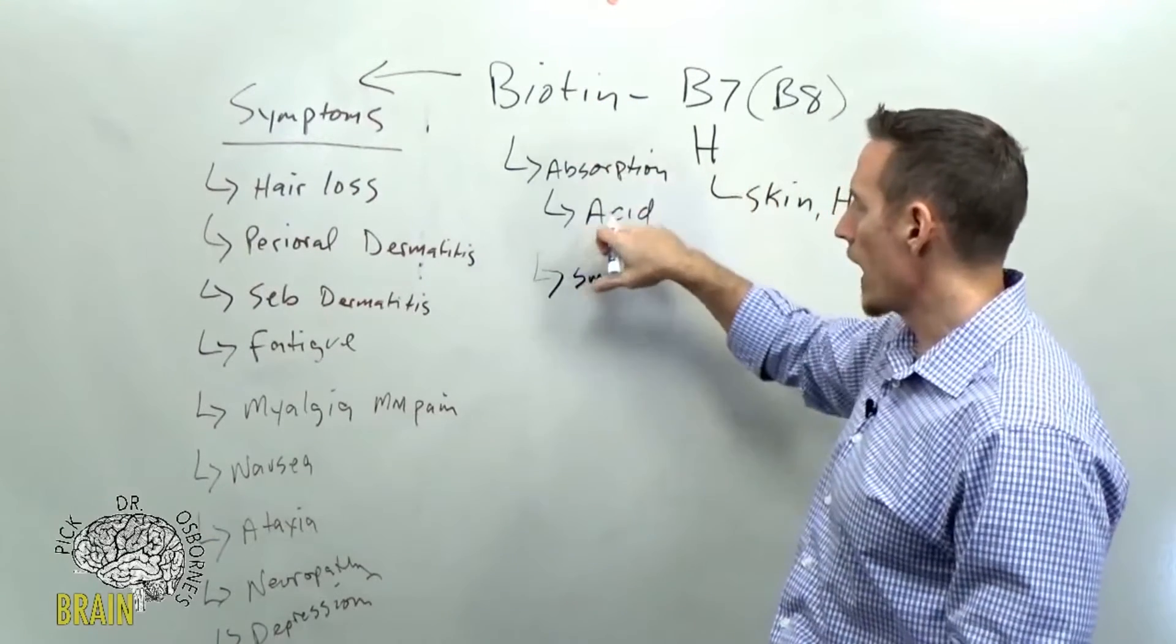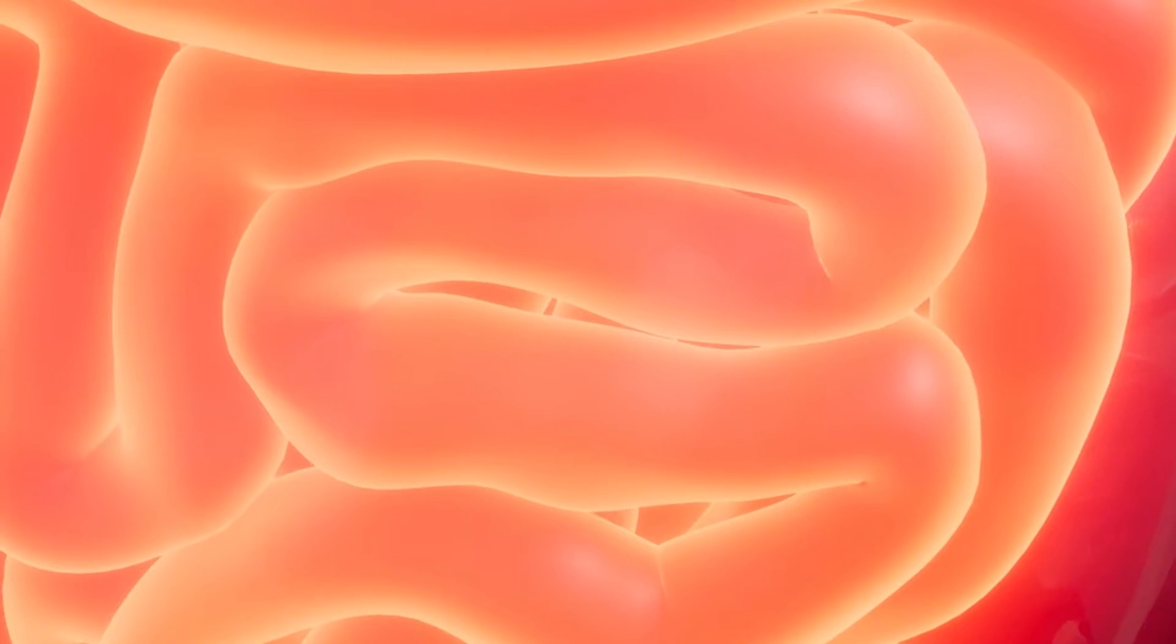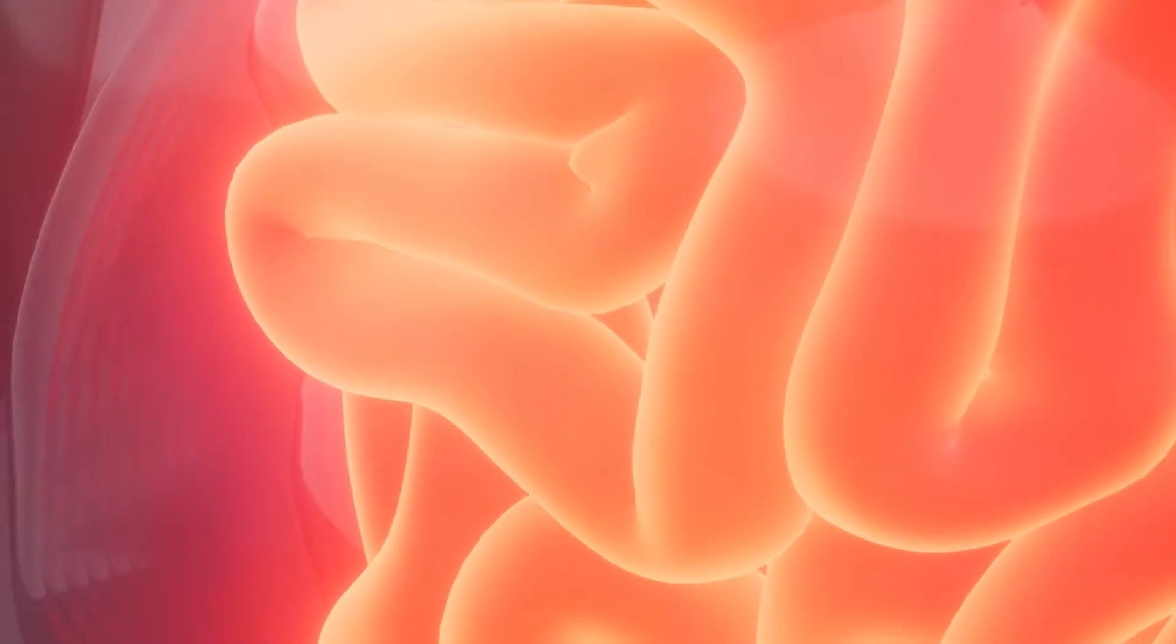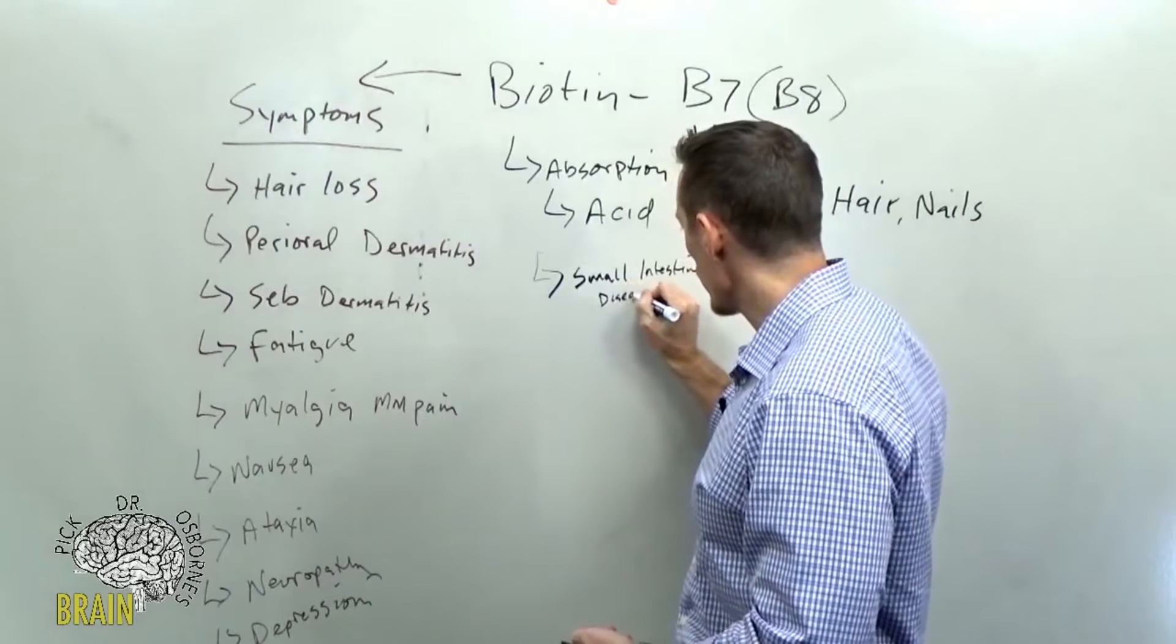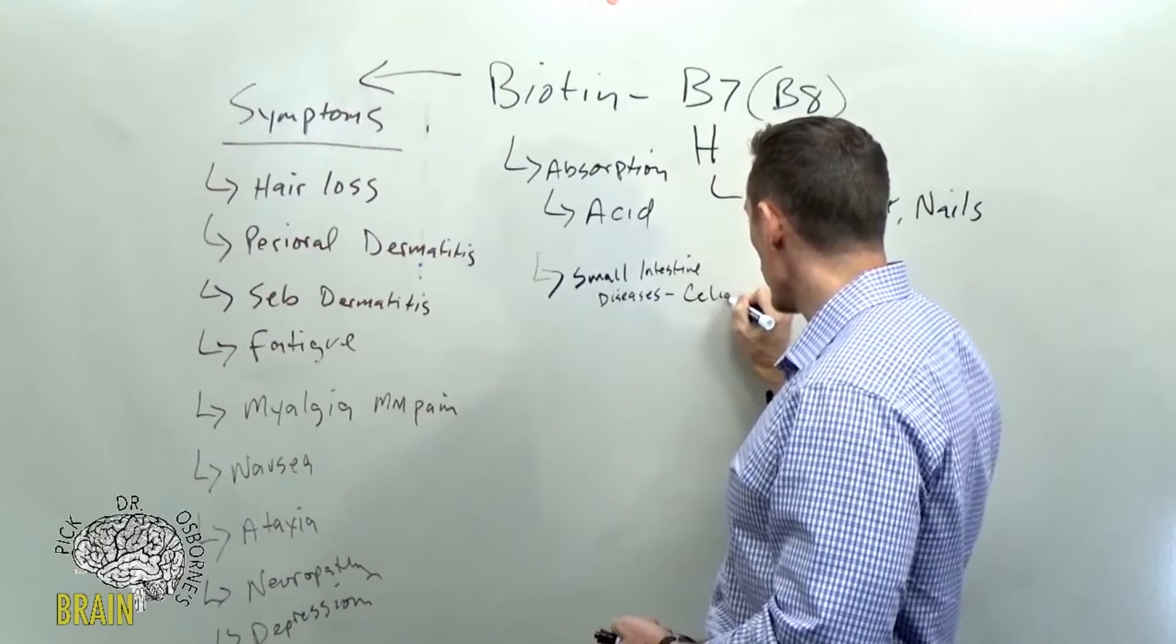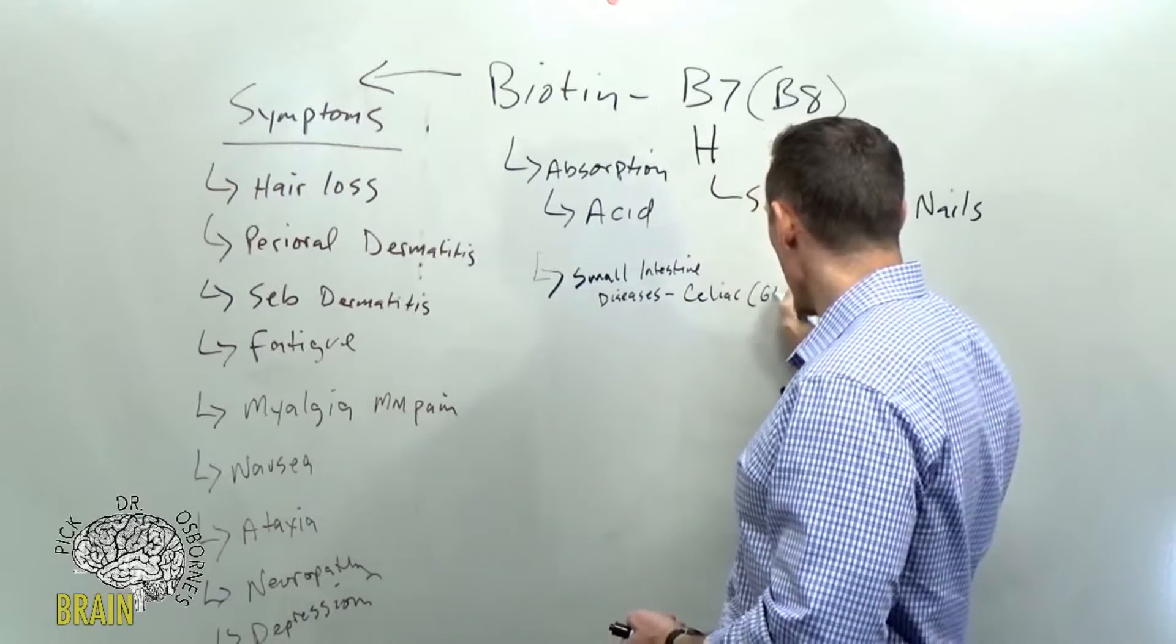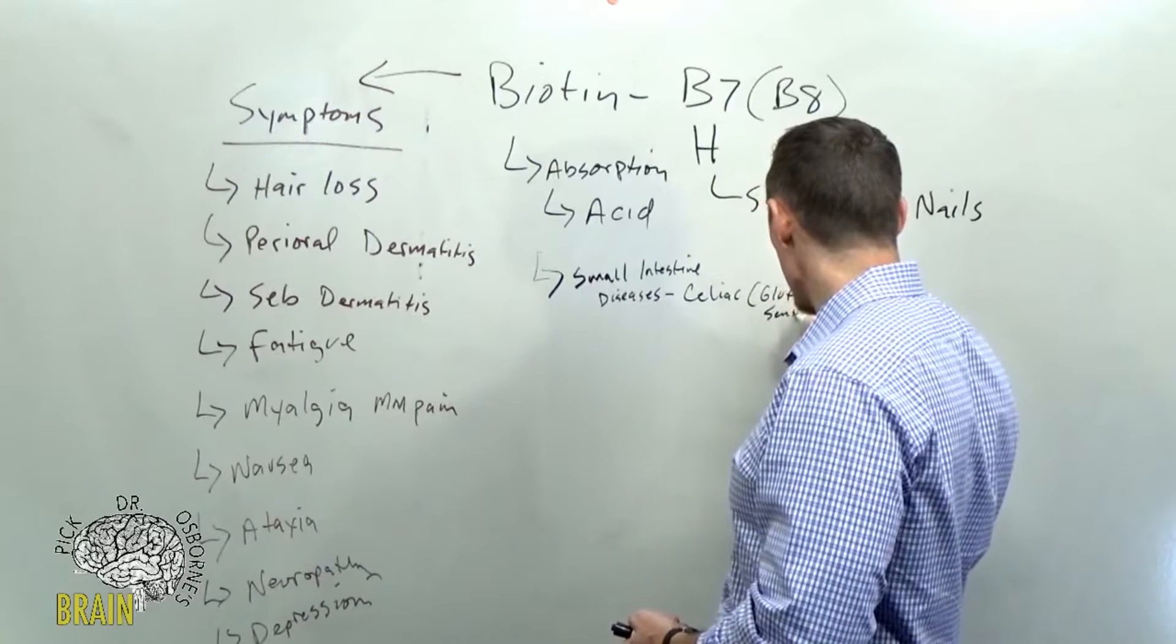Most of biotin is absorbed in the small intestine. It's broken down in your food through acid, but then when it hits the small intestine, it's taken up by the cells of the small intestine. What might affect the small intestine that could contribute to biotin deficiency? We've got a number of different diseases of the small intestine. One of them is celiac disease.